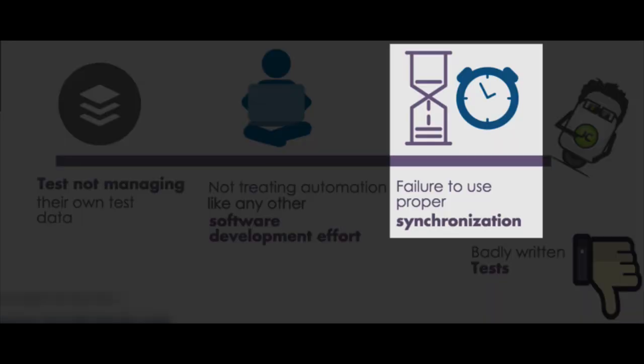Number nine, failing to use proper synchronization. A lot of times people assume their application or elements are going to be in the right state before they interact with them. That's a big problem. You want to make sure you're using a robust synchronization method, like an explicit wait to say, before you click on something, is it clickable? Before you interact with an element, is it present? If you don't have that in place, there will be issues. You need to focus on having good synchronization as you develop your test automation scripts.